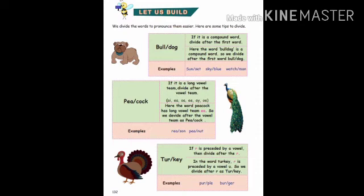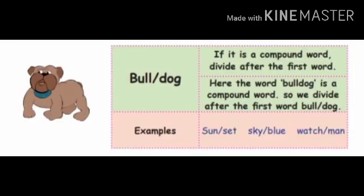Now let's move on to the first pattern — the bulldog pattern. Bulldog pattern is nothing but a compound word. It is very easy to remember. If it is a compound word, divide after the first word. Compound words — you know very well — are formed by joining two words.